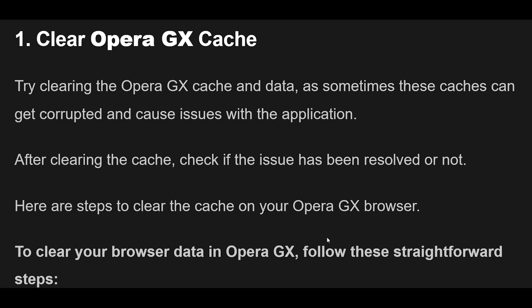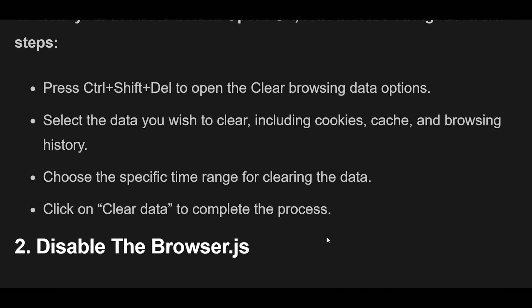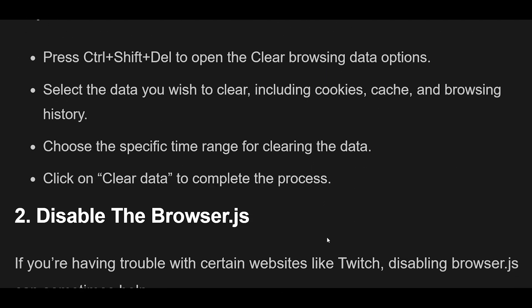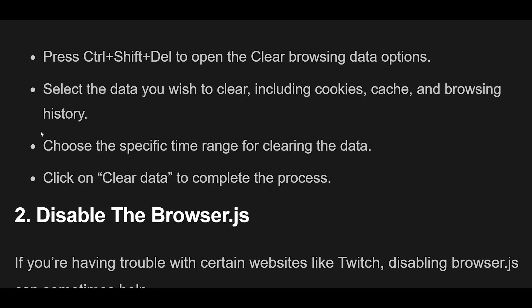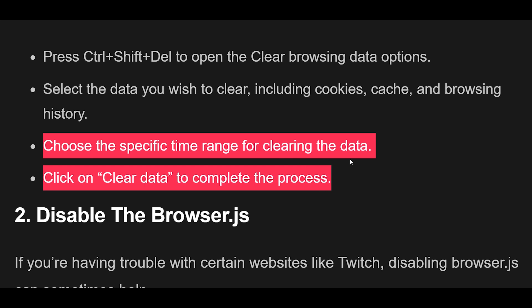To clear your browser data in Opera GX, follow these straightforward steps. Press Ctrl+Shift+Delete to open the clear browsing data options. Select the data you wish to clear, including cookies, cache, and browsing history. Choose the specific time range for clearing the data. Click on Clear Data to complete the process.